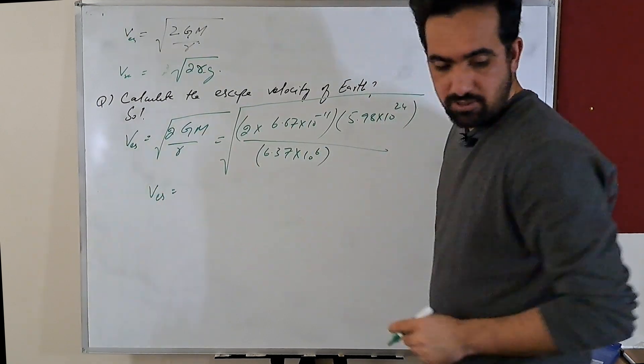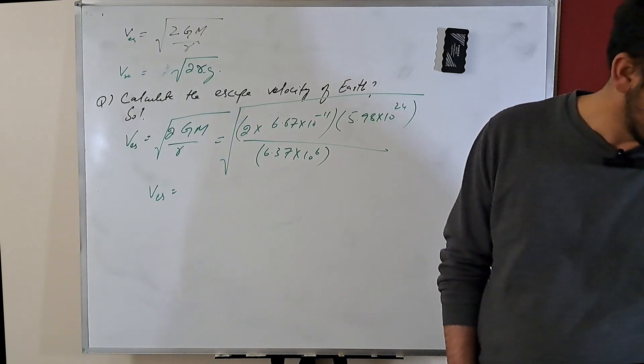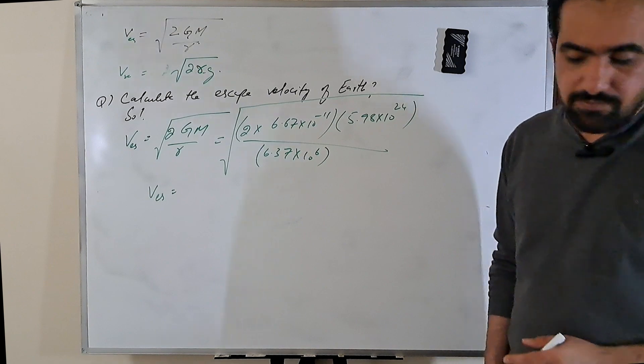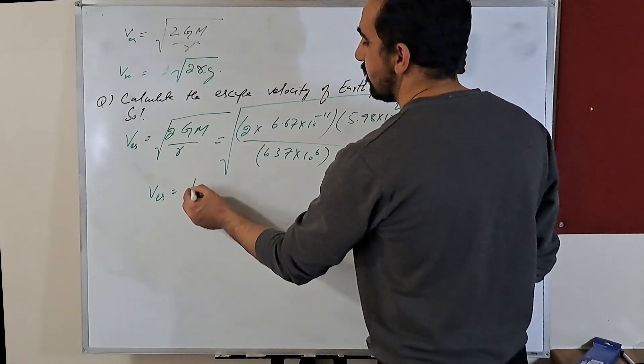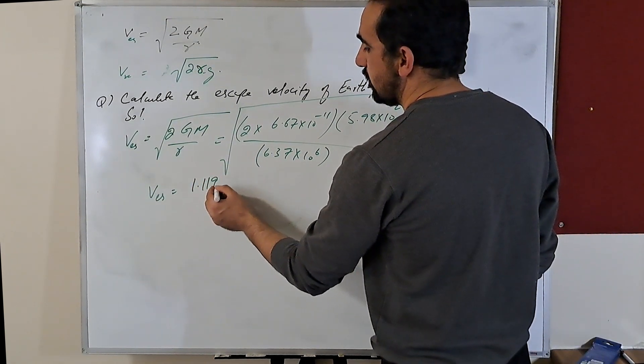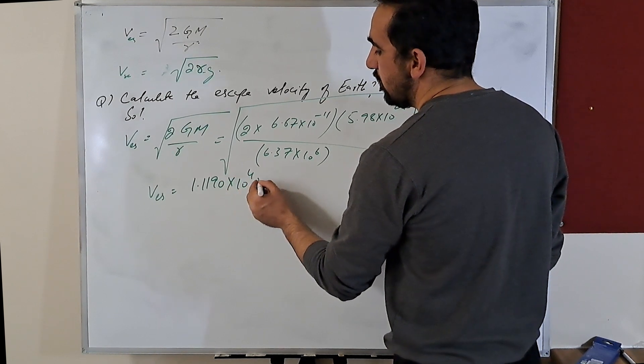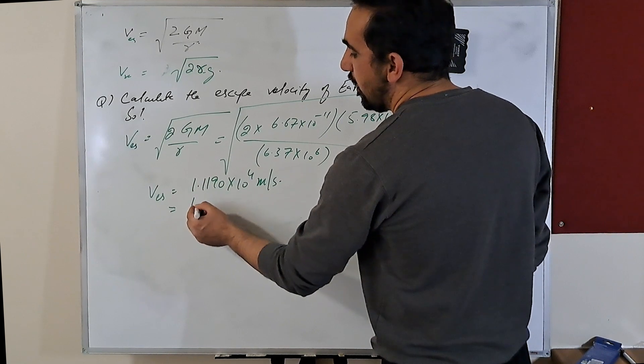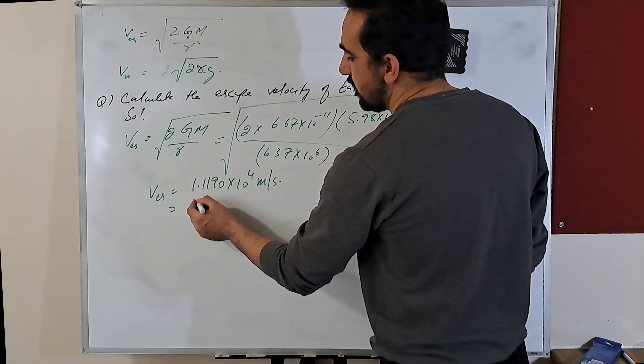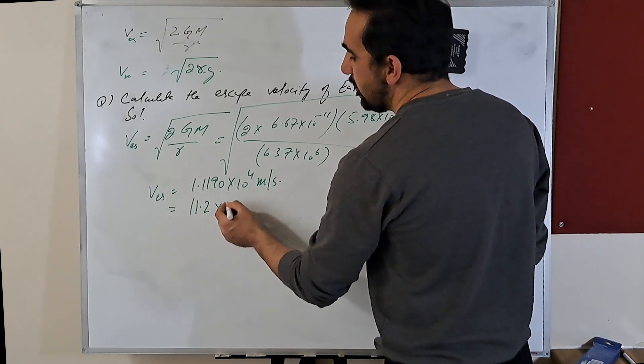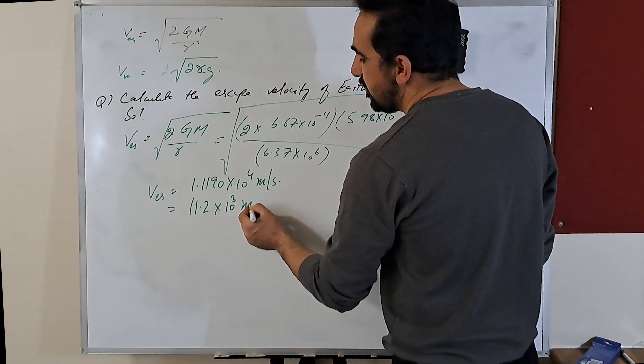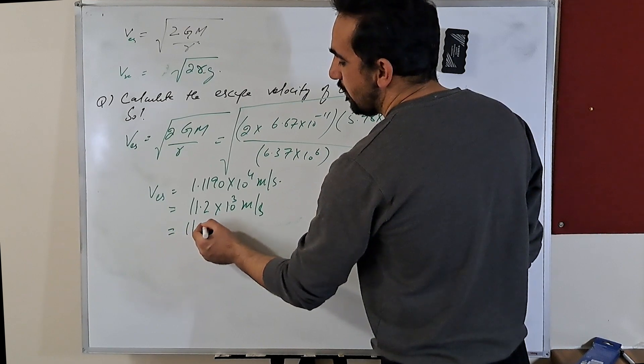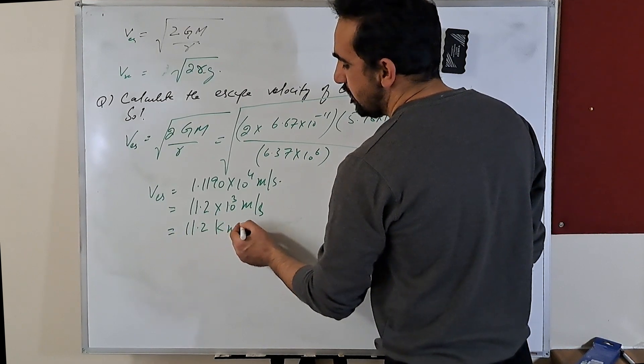So v_escape will become equal to, if you solve this, it will become equal to 1.119 times 10 to the power 4 meter per second. Or you can just write it 11.2 into 10 to the power 3 meter per second. 10 to the power 3 is kilo, so 11.2 kilometer per second.